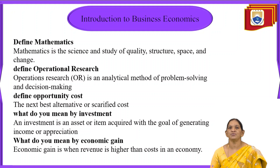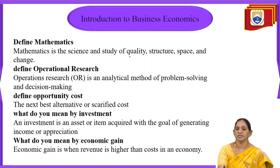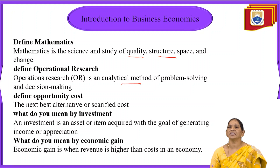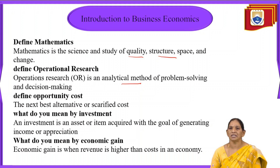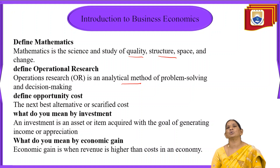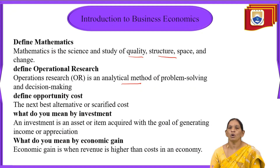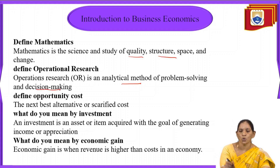Next, define operational research, famously called OR. Operational research is an analytical method of problem solving and decision making. We use analytical methods like ANOVA, t-test, and chi-test — using formulas and testing methodology to solve a given problem. Operational research not only provides an analytical method to solve problems, but also helps identify what type of decision can be taken based on the analysis.